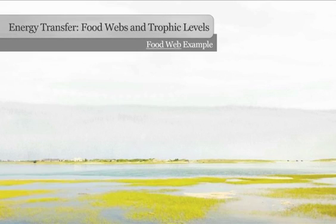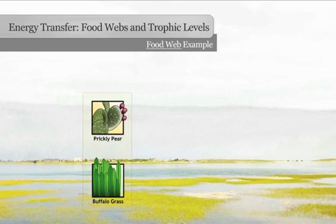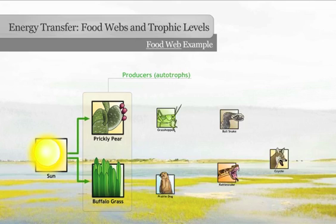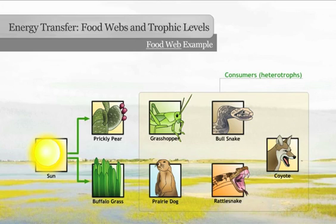Before continuing, let's briefly review producers and consumers. Producers are food makers or autotrophs. They convert radiant energy from the sun into chemical energy by using photosynthesis. Consumers are food eaters or heterotrophs. They cannot make their own food like producers can, so they must eat other organisms.